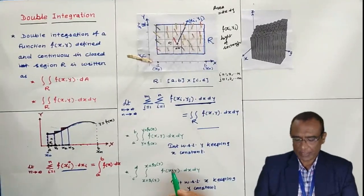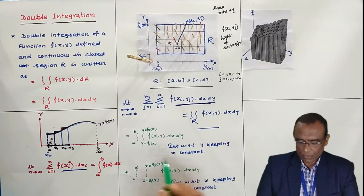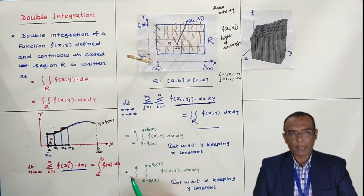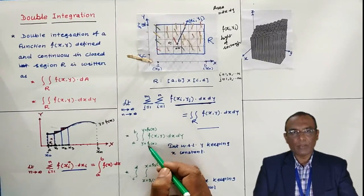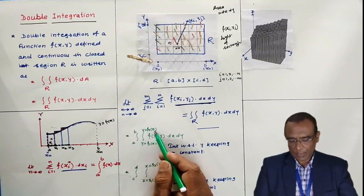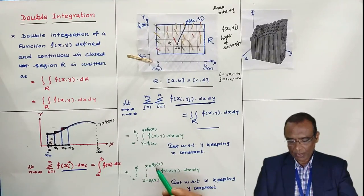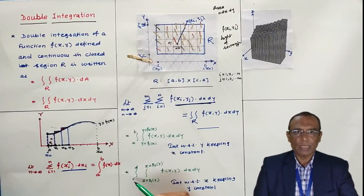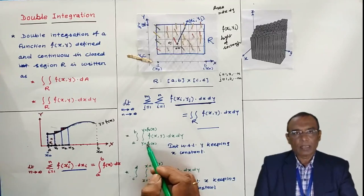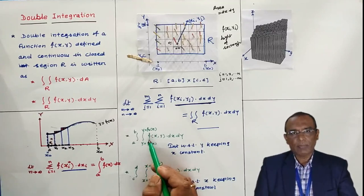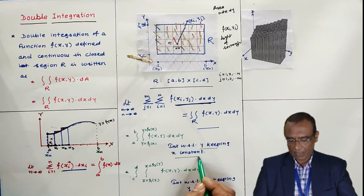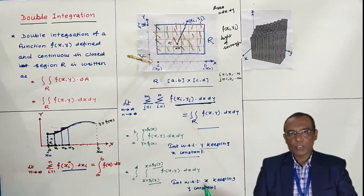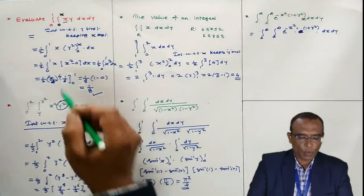Now some short-answer questions on double integration. A few things to remember: the limits of the first integral may be in terms of x or in terms of y; the limits of the last (outer) integral in a double integral are always constants, since we deal with a bounded region. If the limits of the first integral are in terms of x, integrate with respect to y first, keeping x constant. If the limits are in terms of y, integrate with respect to x first, keeping y constant.